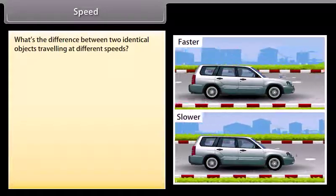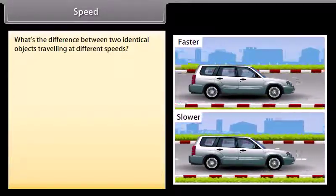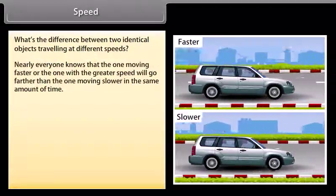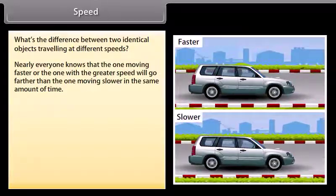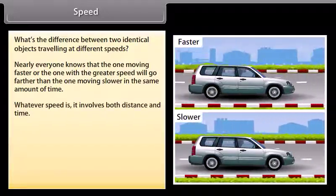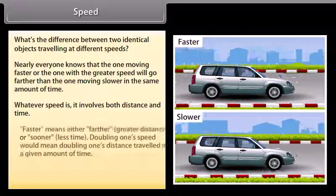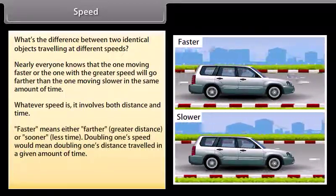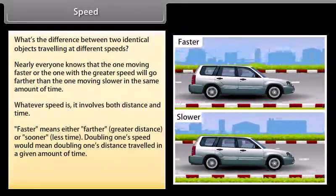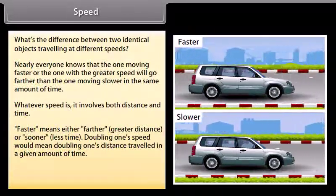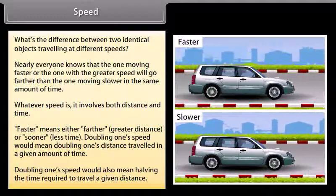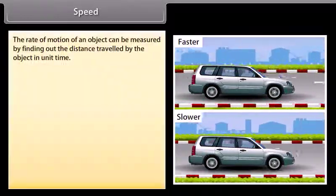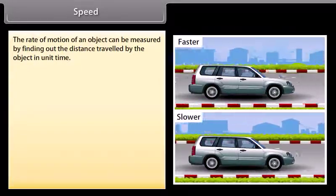Speed. Nearly everyone knows that the one moving faster, or the one with a greater speed, will go farther than the one moving slower in the same amount of time. Whatever speed is, it involves both distance and time. Faster means either farther (greater distance) or sooner (less time). Doubling one's speed would mean doubling one's distance traveled in a given amount of time, or halving the time required to travel a given distance. The rate of motion of an object can be measured by finding out the distance traveled by the object in unit time.